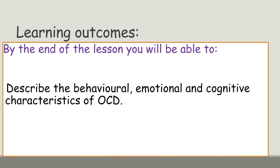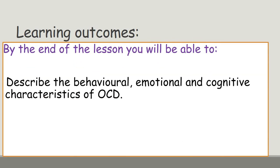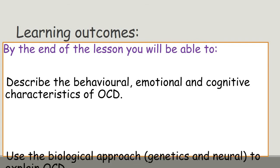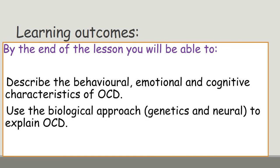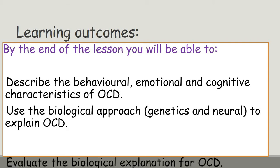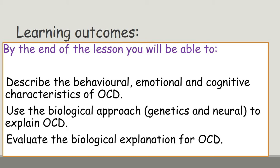Last week you looked at the behavioural, emotional and cognitive characteristics. I'm going to go through those and give you some extra material. Then we're going to go through the biological approach, looking specifically at the genetic component and the neural explanation. We need to know both of these in detail, because in the exam you can be asked specifically about genetics, specifically about neural, or you can have a more general question describing the biological approach. So you need to know both in detail. Next week we'll evaluate that explanation.